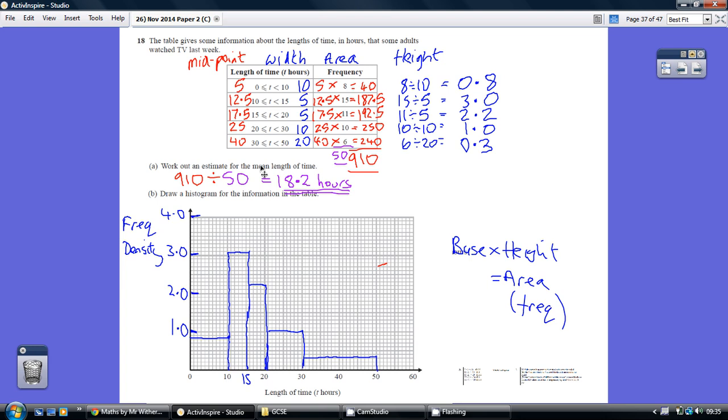To work out our mean average, or our estimate of our mean average, is the estimated number of hours, 910, divided by the 50 adults. That's 18.2 hours.